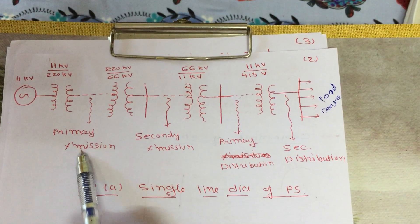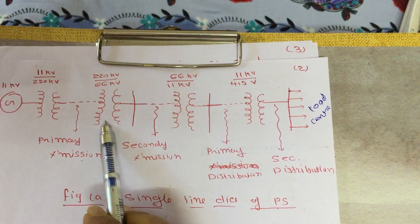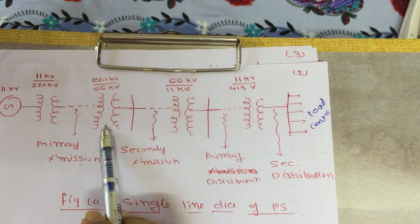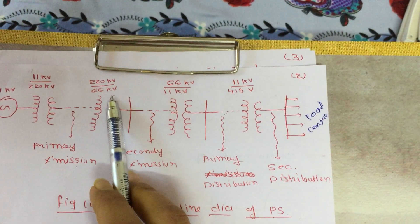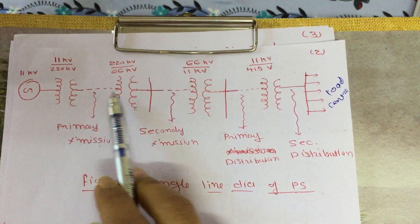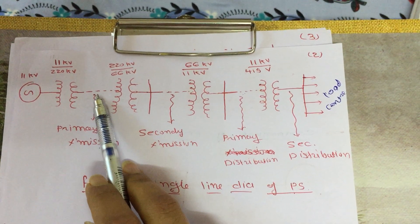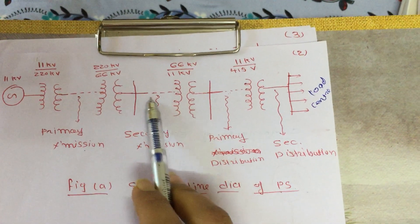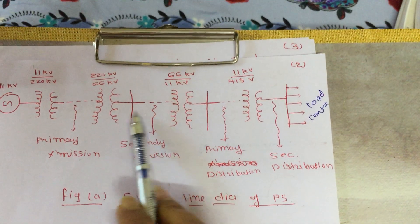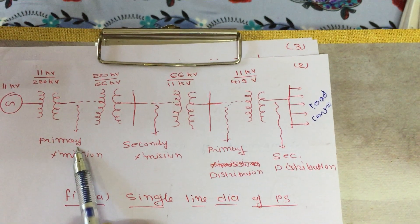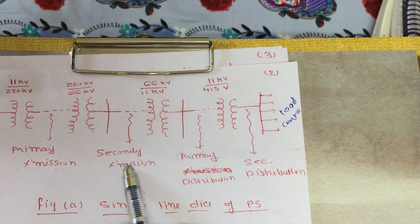This is termed as the primary transmission line. Then a second transformer steps down 220 KV to 66 KV. So the first transformer is the step-up transformer and the second is the step-down transformer. At this point, 220 KV voltage is available, and after step-down, 66 KV is available. This section is the primary transmission line and this is the secondary transmission line.